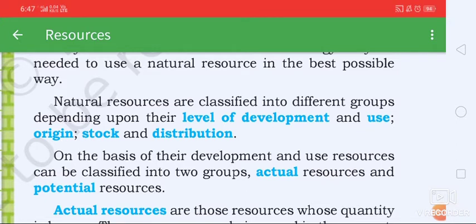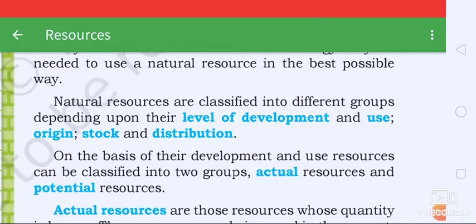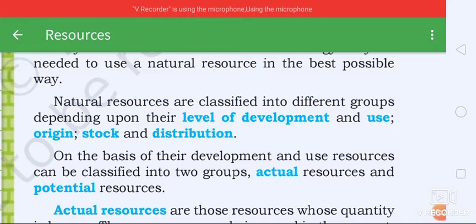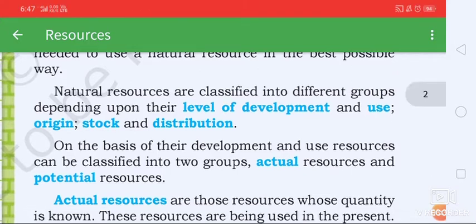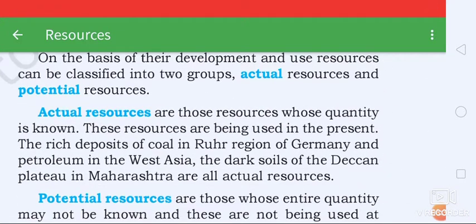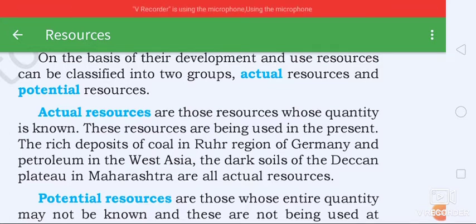On the basis of their development and use, resources can be classified into two groups: actual resources and potential resources. Actual resources are those resources whose quantity is known and are being used in the present.